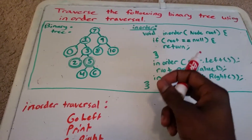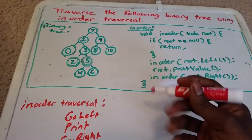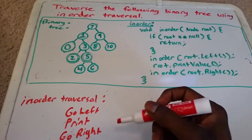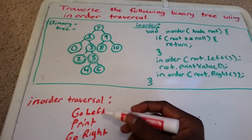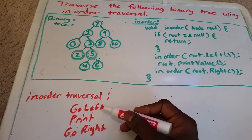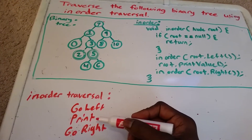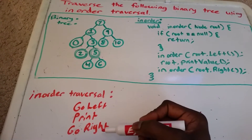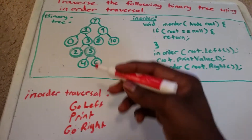And here to the right we have our inorder program, or function. All this program is saying is to go as far left as possible, then once we can't go left anymore, print the value, and then once we're done printing the value, we're going to go as far right as possible. So it's that simple.